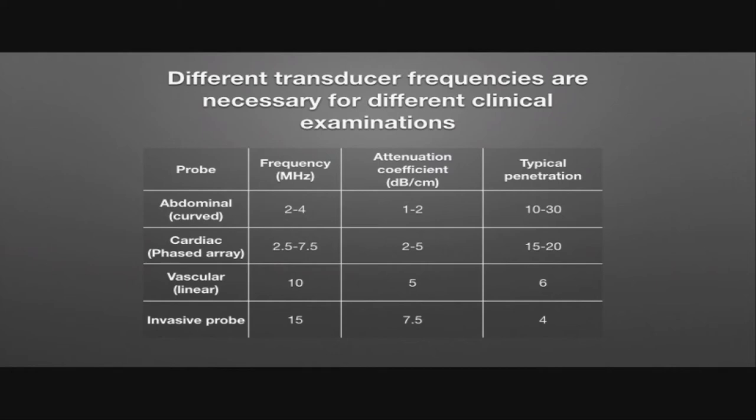Next up are the vascular probes, which are the linear probes, operating at around 10 MHz with a higher attenuation coefficient and typical penetration of 6 cm. Finally, the invasive probes, like the obs and gynae probes, operate at 15 MHz. They have an even higher attenuation coefficient and typical penetration of around 4 cm.